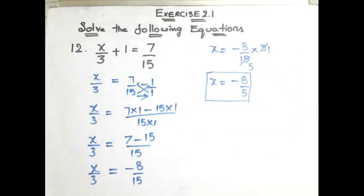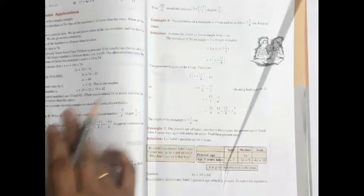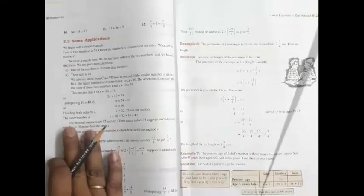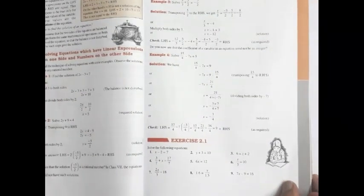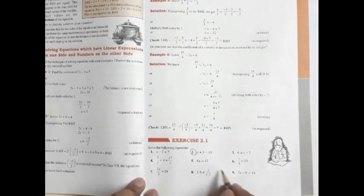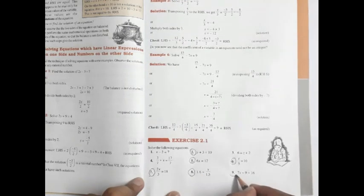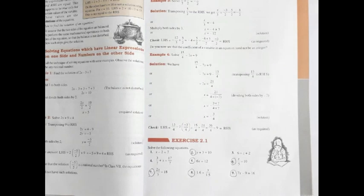Hope you are clear with the concept. This is the class work to be copied today. I explained problems 1, 3, 4, 10, 11, and 12 in the class work. The homework is problems 2, 5, 6, 7, 8, and 9. Copy what I explained on the board into your CW, and the circled ones write as today's homework. That's all for today. We'll meet in the next class. Bye.